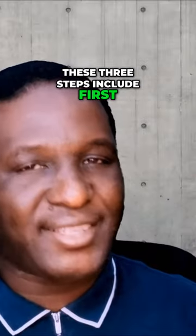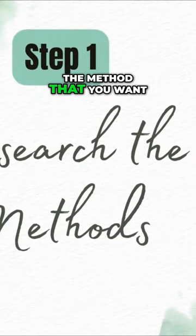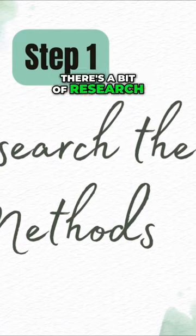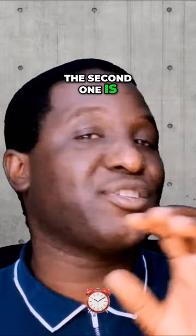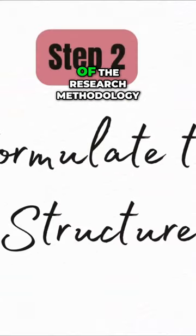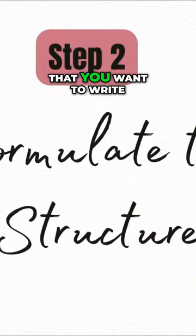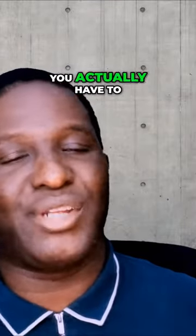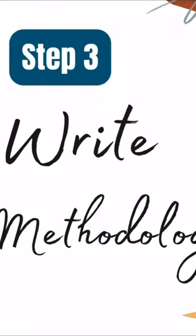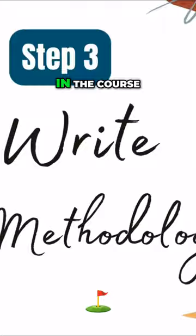There are three steps. First, you have to research the method that you want to use — so research is the first instance. The second is to formulate the structure of the research methodology that you want to write, and then finally you actually have to write the research methodology. I'll be addressing these three points in the course of this video.